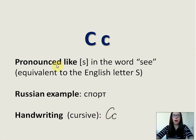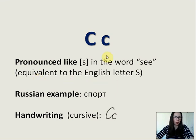С is pronounced like S in the word 'see.' It is equivalent to the English letter S, but it looks like C. Russian example: 'спорт,' which means sport. And here is the cursive.